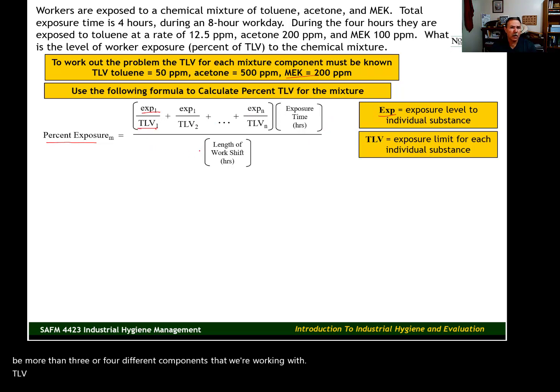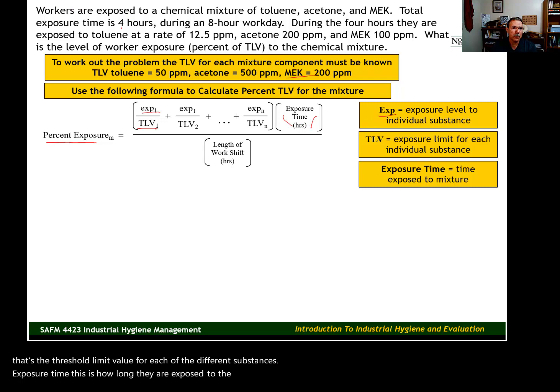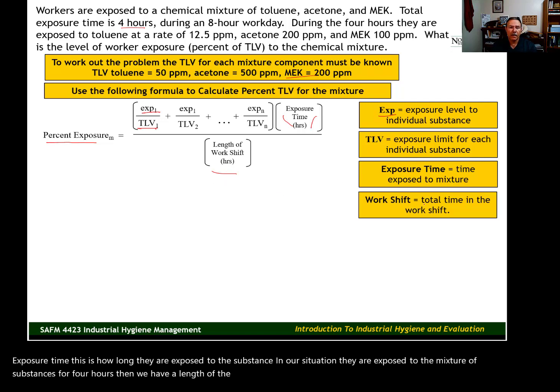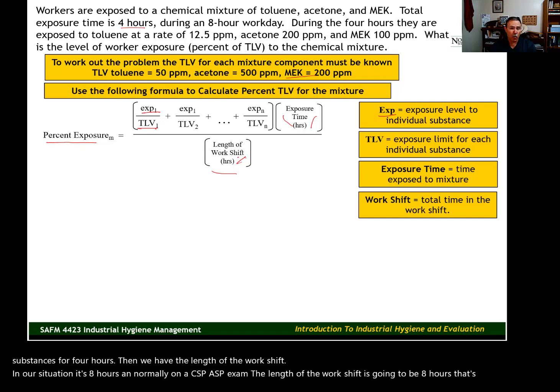Exposure time is how long they are exposed to the substance. In our situation, they're exposed to the mixture of substances for four hours. Then we have length of the work shift. In our situation, it's eight hours. Normally on a CSP or ASP exam, the length of the work shift is going to be eight hours. That's considered a standard workday in the United States.